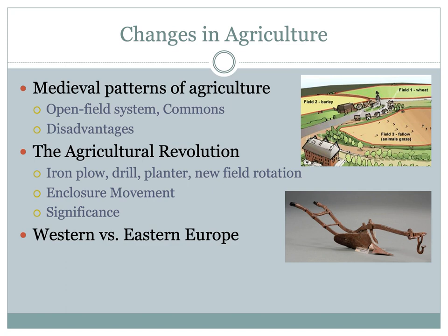This was because manorialism was still very prevalent. But areas like the Netherlands, especially the province of Holland, did not see quite as high a percentage because it was more densely populated and more people were living in towns and cities. Because of these medieval patterns of agriculture, crop yields — meaning how much a crop produced — had not significantly improved since the Middle Ages.